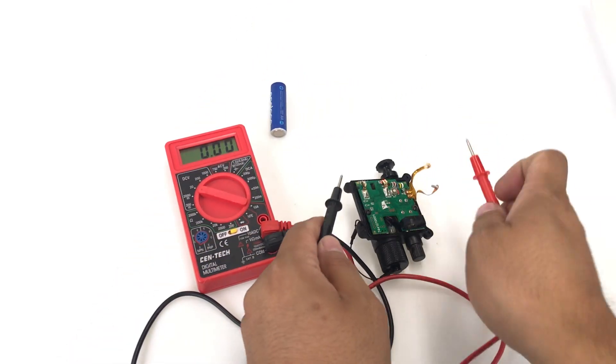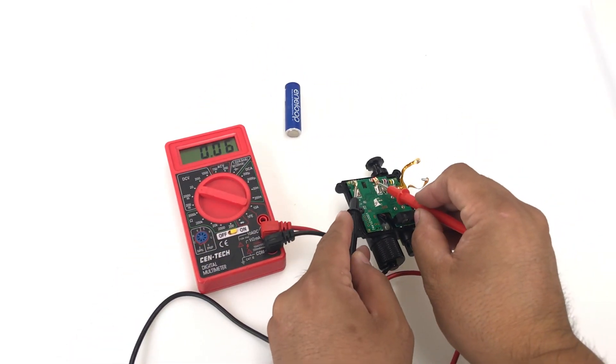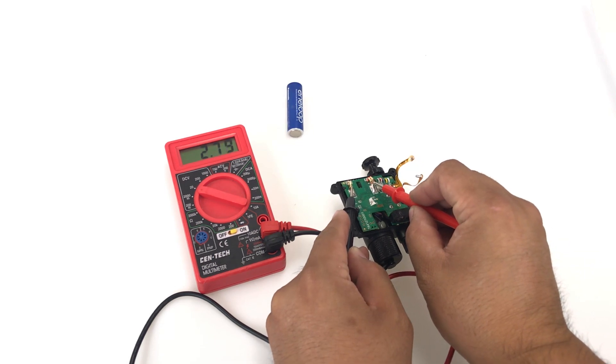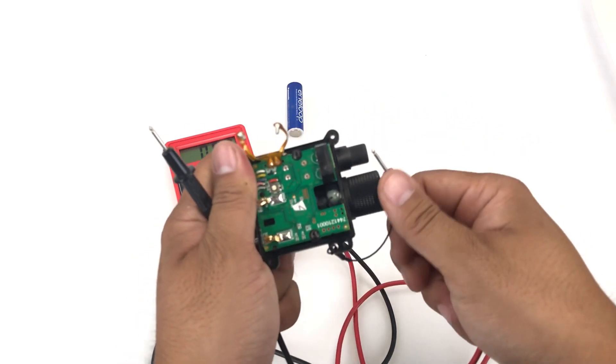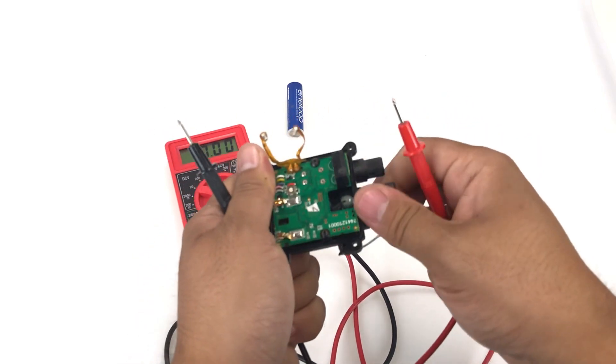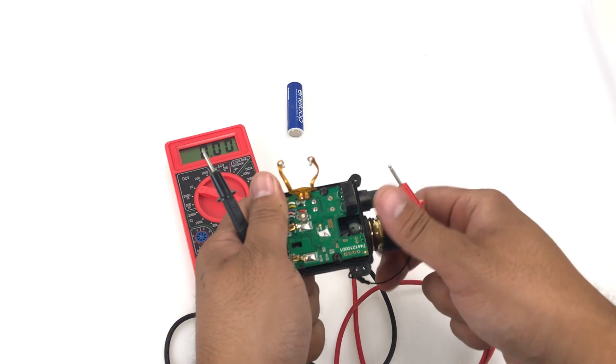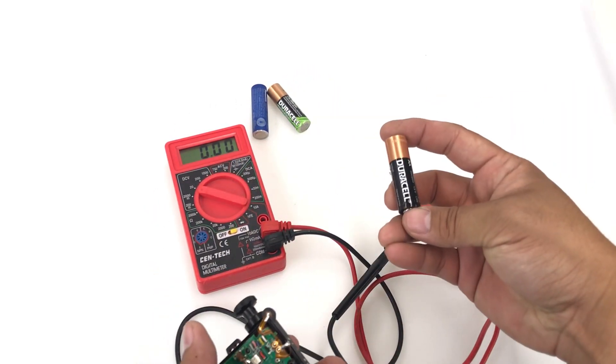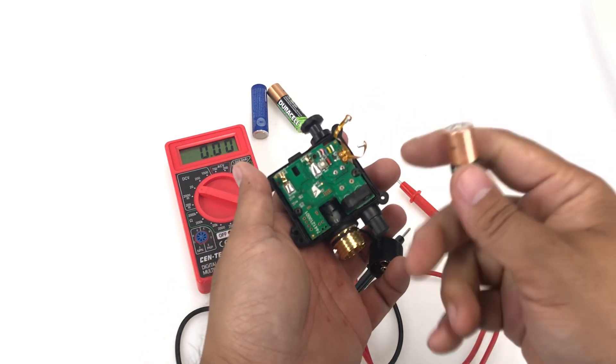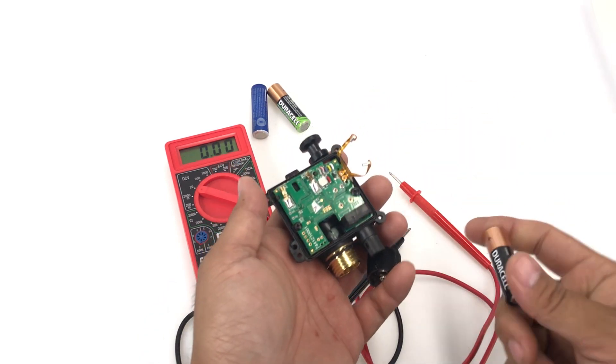It turns on. 2.79 volts. So I have two rechargeables here, one's a Duracell, one's an Eneloop, and they're still producing 2.79 volts, exactly the same voltage that this alkaline is producing. All that matters is this is changing the voltages in here to 2.79 volts.